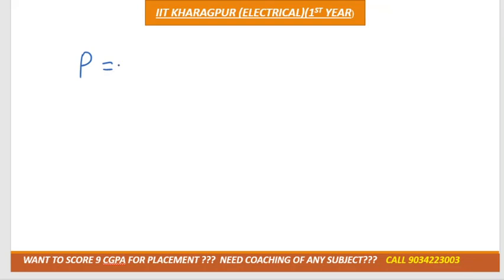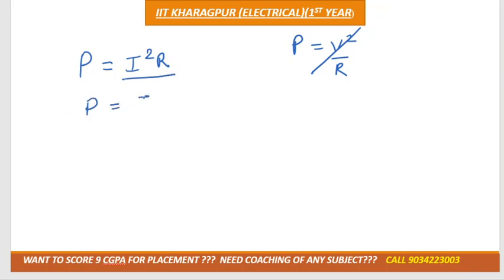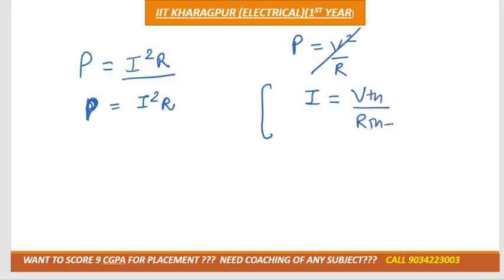What is the formula for power? One formula is I squared R. We'll use P = I²R. Now according to Thevenin's theorem, the value of I would be VTH divided by RTH plus RL.